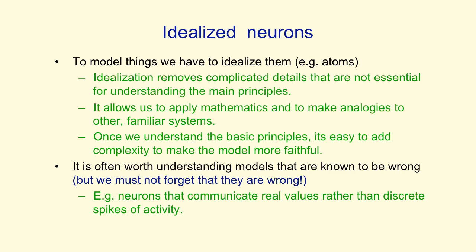For example, a lot of work on neural networks uses neurons that communicate real values rather than discrete spikes of activity. And we know cortical neurons don't behave like that, but it's still worth understanding systems like that. And in practice, they can be very useful for machine learning.